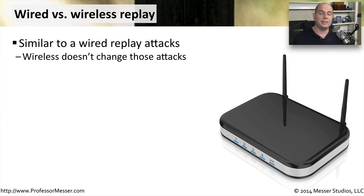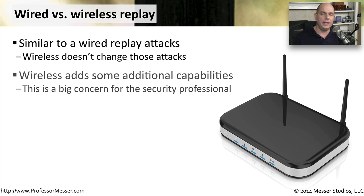When you're on a wireless network, you still need to be aware of the possibility of a replay attack. This is very similar to the replay attacks you would get on a wired network. In fact, on a wireless network, it may be even a little bit easier to gather the information that someone might need to then perform that replay attack. This is a big problem for people trying to protect their wireless networks in the enterprise, because you are sending that signal out everywhere — it's very difficult to localize it. And therefore, that opens up some security concerns for you as a security professional.